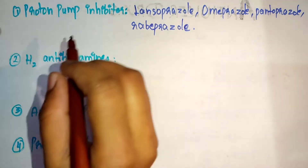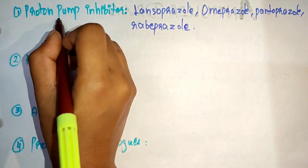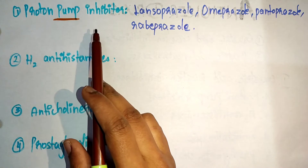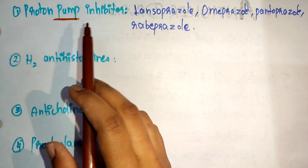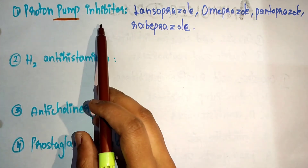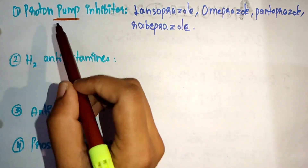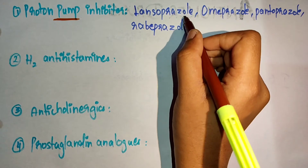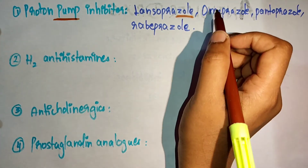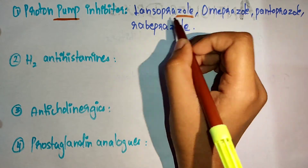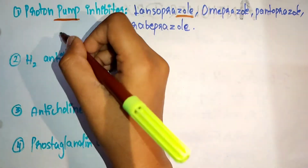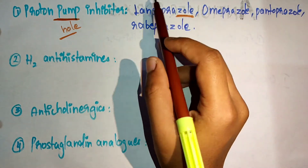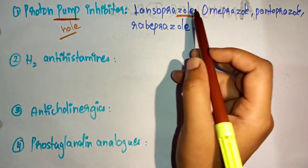How can you remember these? First, remember this: proton pump inhibitor — think of a pump. A pump has a hole in it. So all the drugs that come under proton pump inhibitors should end with '-zole'. Hole — zole. The pump has a hole, so all the drugs end with '-zole'.